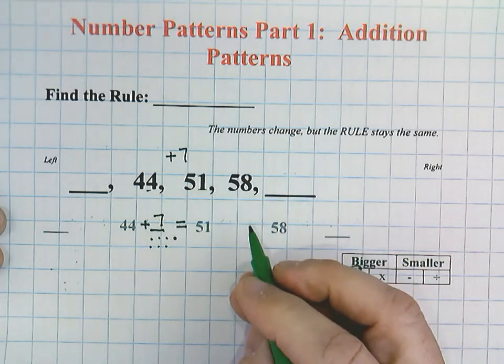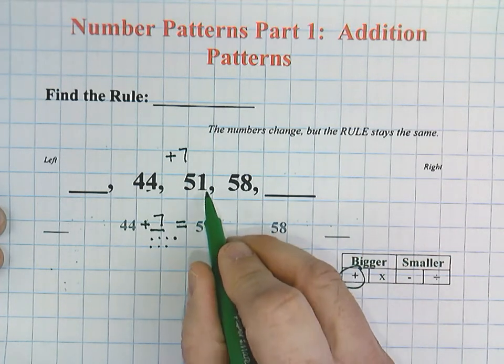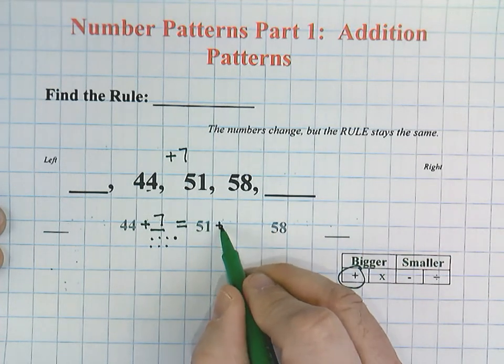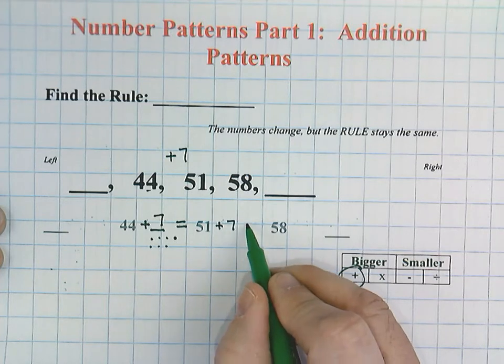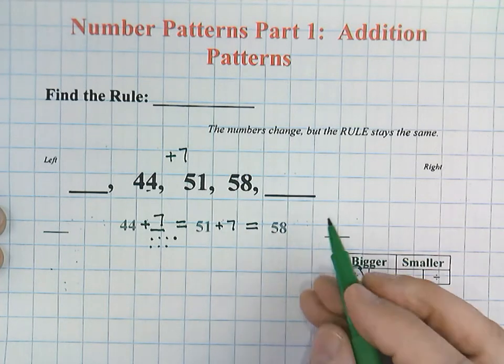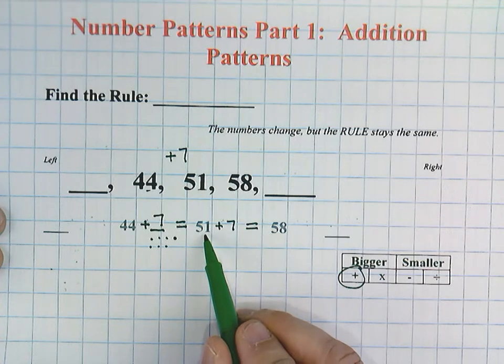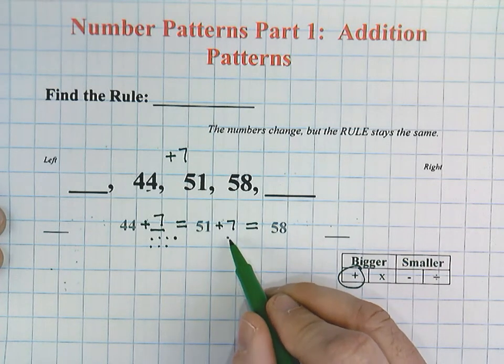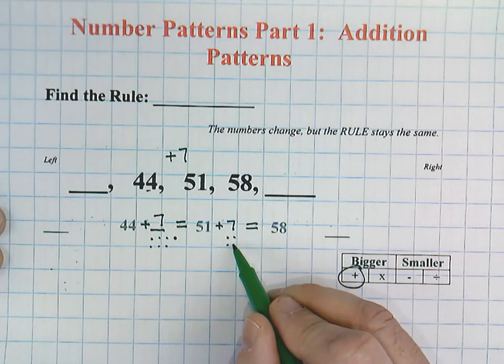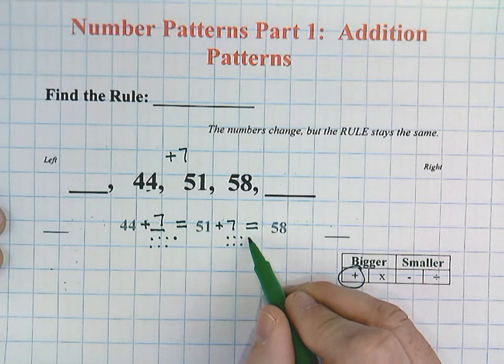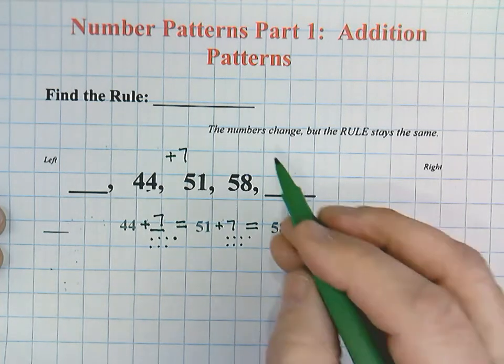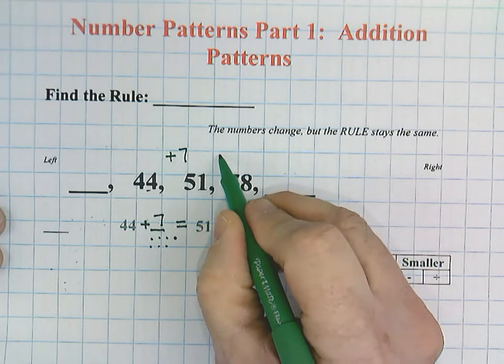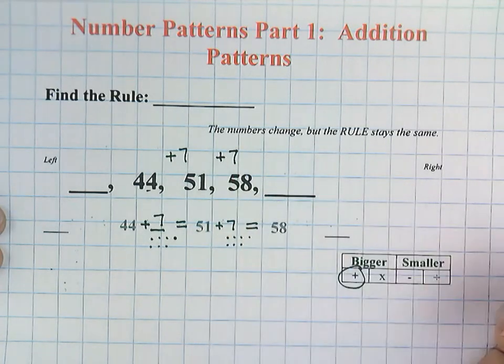We want to continue this. Let's check with 51 to 58. So 51 plus 7, that's our rule, should equal 58. Let's check: 51, and if I count on 7 [counting 52, 53, 54, 55, 56, 57, 58]. And that checks out. So we know we have a plus 7. We've checked it twice.